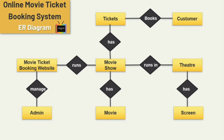Now let's see the cardinality ratio between these entities. One admin manages one movie ticket booking website, and one movie ticket booking website runs different movie shows. One movie show runs in many theaters, and one movie show has one movie only. Next, one theater has many screens, one movie show has many tickets, and one customer can book many tickets. These are the cardinality ratios between these entities.